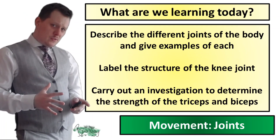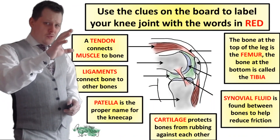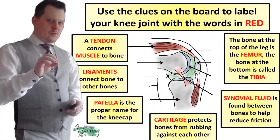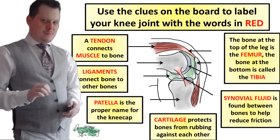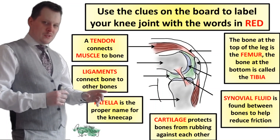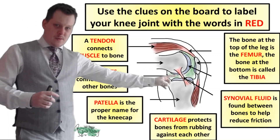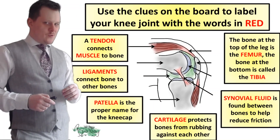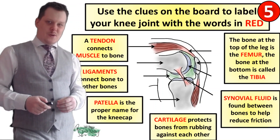We've described the different joints of the body and given examples of each. Next, use the clues on the board to label your knee joint worksheet — only label the arrows with the words in red; the other words are just clues to help you place them correctly. For example, it says ligaments connect bone to other bones — looking at the diagram you can see a bone here and a bone down there, and something connecting the two: that could be our ligament. I'm going to put five seconds on the clock; pause if you need more time.